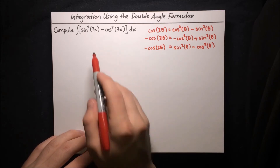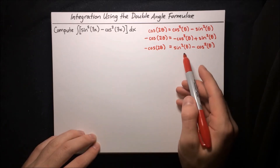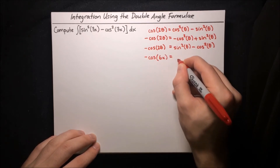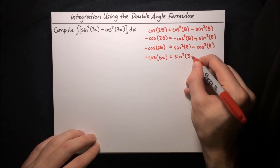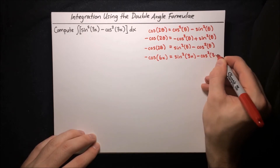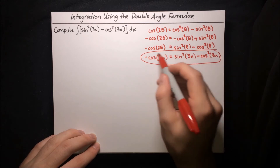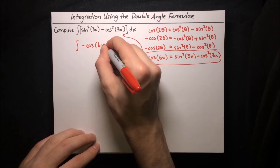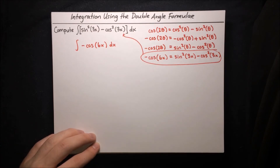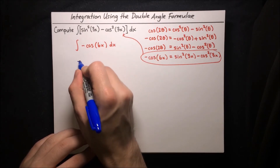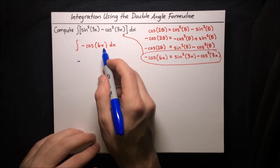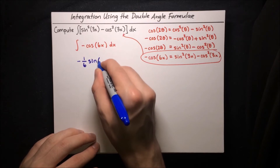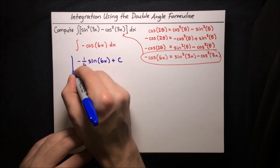To make this match our integral, we substitute 3x for θ. So on the left we get negative cosine of 2 times 3x, which is 6x, and on the right we have sine squared of 3x minus cosine squared of 3x. So the integral becomes just the integral of negative cosine of 6x dx. The integral of cosine is sine, and with the negative sign it's negative sine. With 6x inside, the chain rule gives a factor of 6, so we multiply by one sixth: negative one sixth sine of 6x plus our constant.